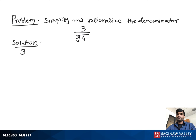Simplify and rationalize the denominator: 3 over cube root 4. To make the denominator a rational number, we have to remove the radical sign — the cube root.